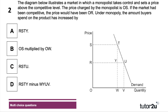Question two: the diagram illustrates a market in which a monopolist takes control and sets a price above the competitive level. The monopoly price is OS; under competition the market price would be OR. Under monopoly, charging price OS, the amount buyers spend on the product has increased by which area? Press the pause button and have a go at question two.